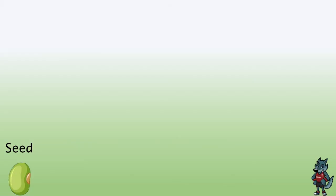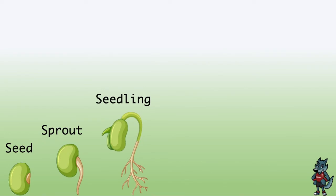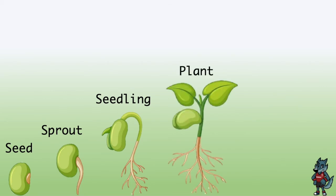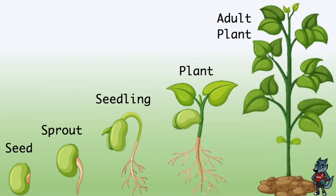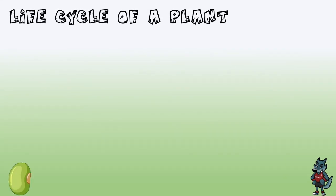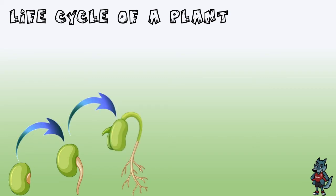The life cycle of a plant begins with a seed. Then the seed turns into a sprout. Then the sprout turns into a seedling. After that, the seedling turns into a plant. And at the end, with all the sunlight, the water, the soil, and the air, it turns into an adult plant.